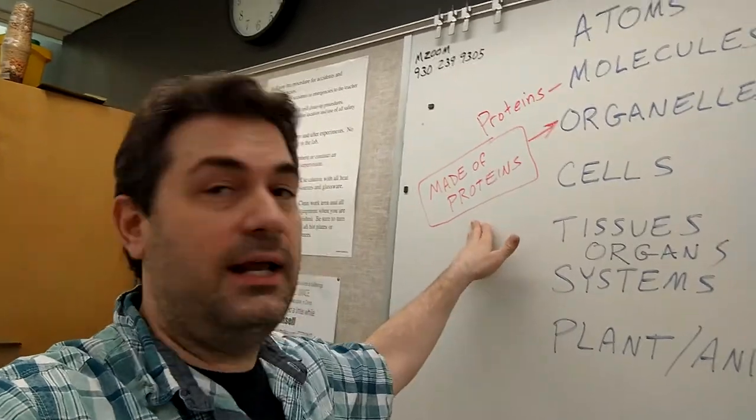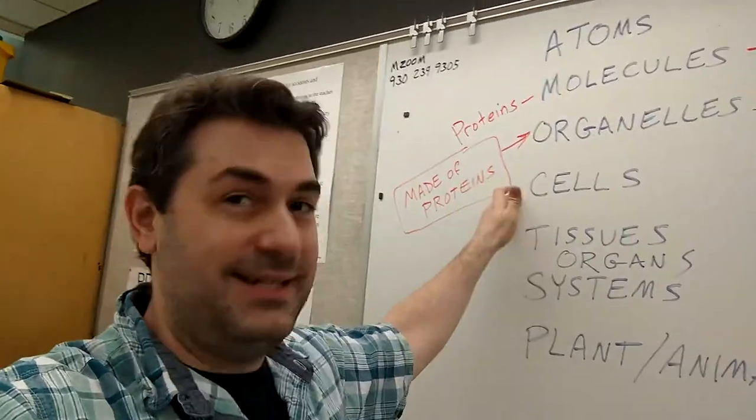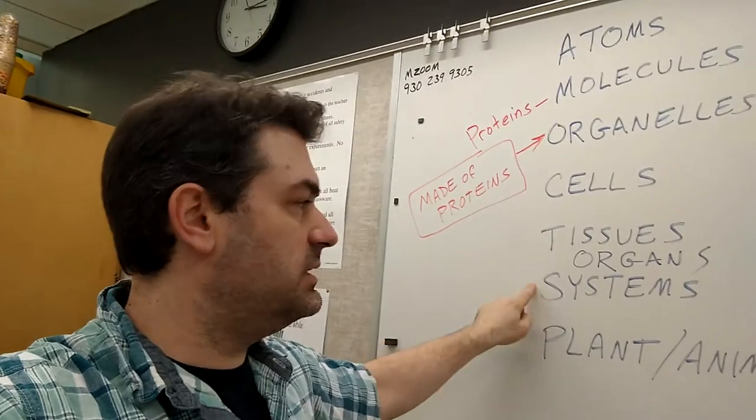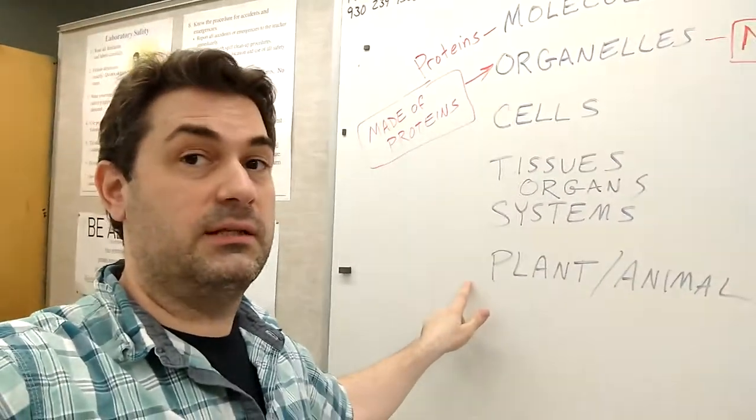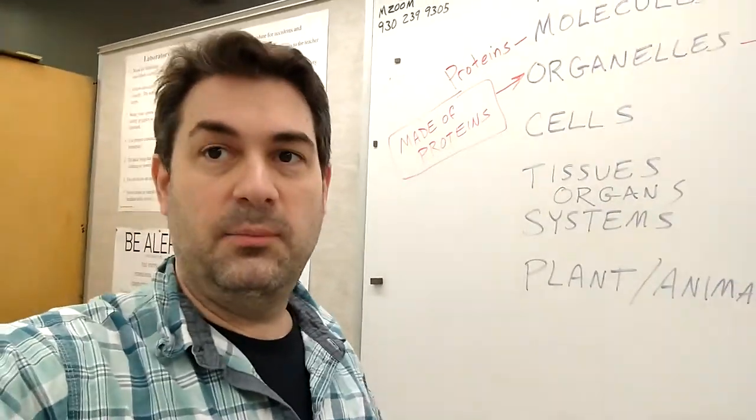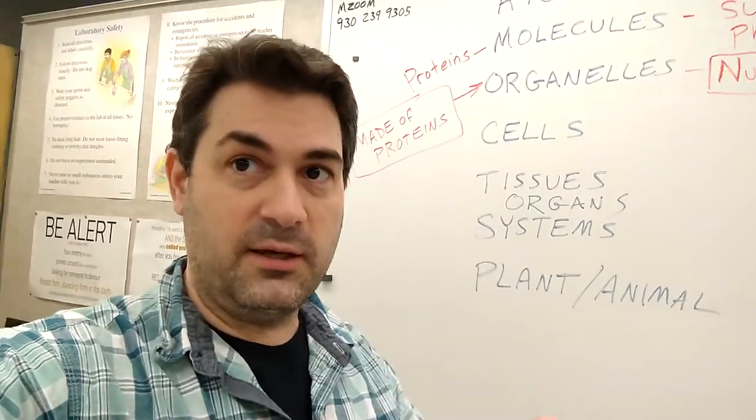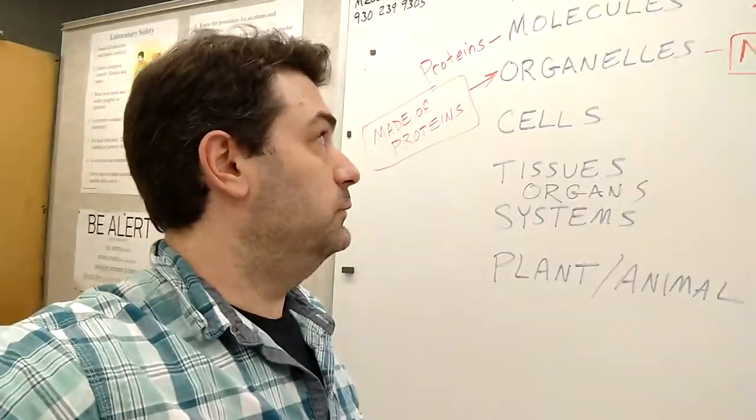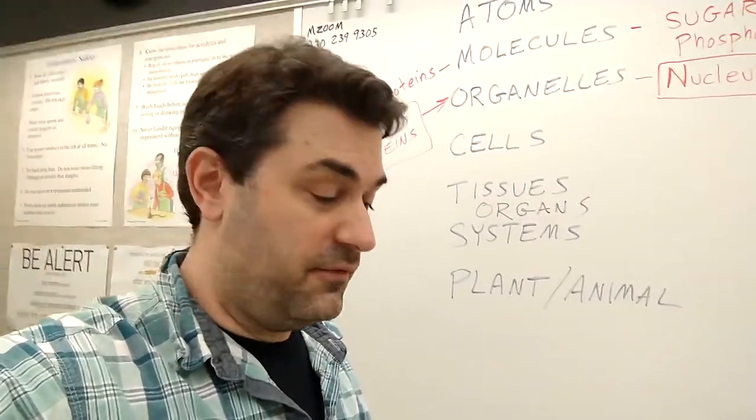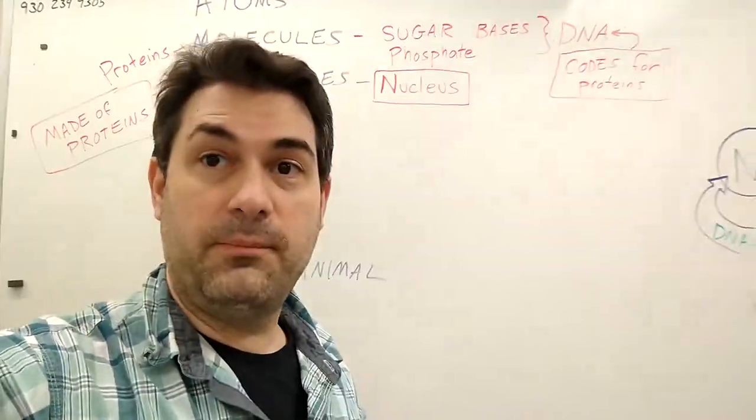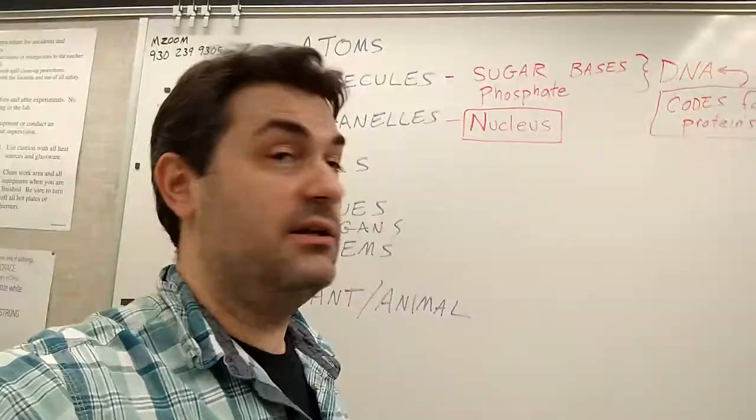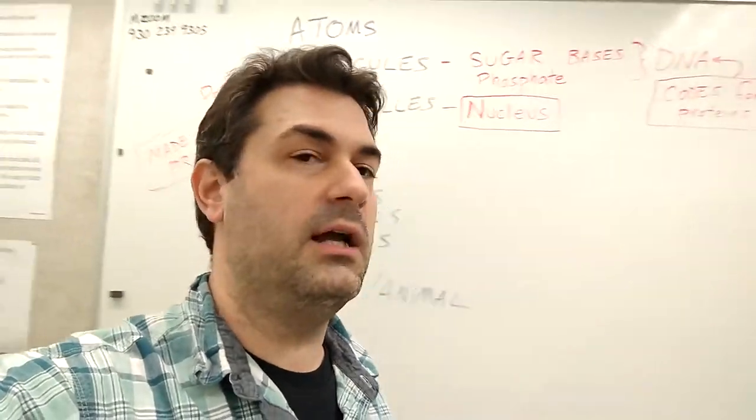Two of the primary things that life is made of is proteins and lipids or fats. Organelles are made out of proteins, which means cells are made out of proteins, which means tissues, organs, organ systems, plants and animals are made of proteins as well as other things. Where do those proteins come from? The cell has to make them, but how does it know what proteins to make? Because there's more than one kind. There's actually a lot of different kinds of proteins.